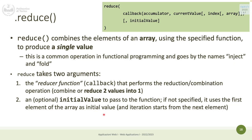This is a common operation in functional programming — called inject or fold in other languages. reduce can pick the elements of an array, combine them in some way, and produce one result. reduce has two arguments: the callback (called the reducer function) that performs the combination or reduction of multiple values into one, and an optional initial value to pass to the function.